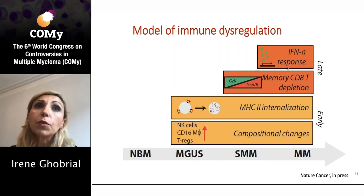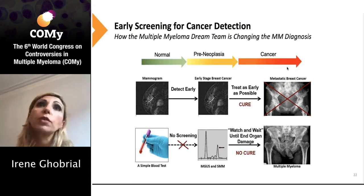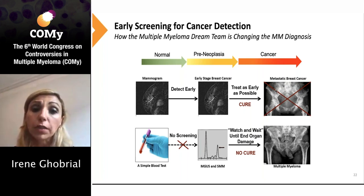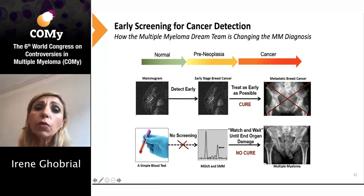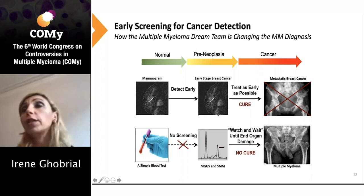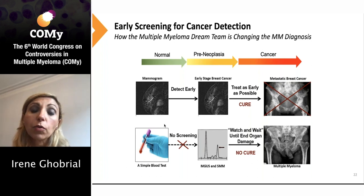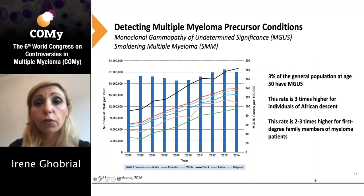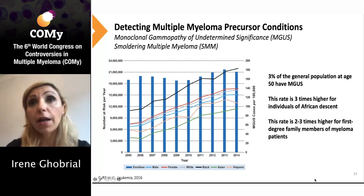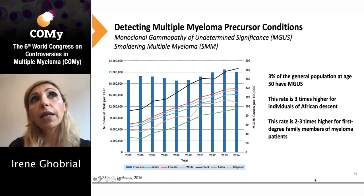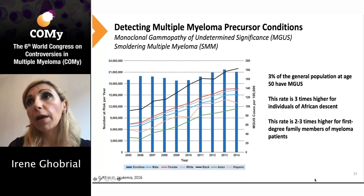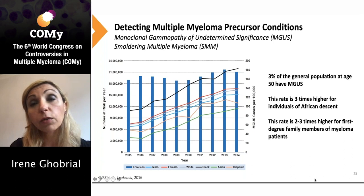In the last few minutes: what else can we do? We know that in any other cancer, when you diagnose patients early — like in mammography screening — you intervene early to prevent progression. If you told anyone to wait for breast cancer to metastasize before treating because patients will become symptomatic, people would laugh at you. MGUS is actually very common: 3% of the population over the age of 50 have MGUS; in African Americans it's three times higher; and in people who have a family member with myeloma or MGUS it's two to three times higher. Many of us are walking around asymptomatic with MGUS, which is a high predictor of developing myeloma.